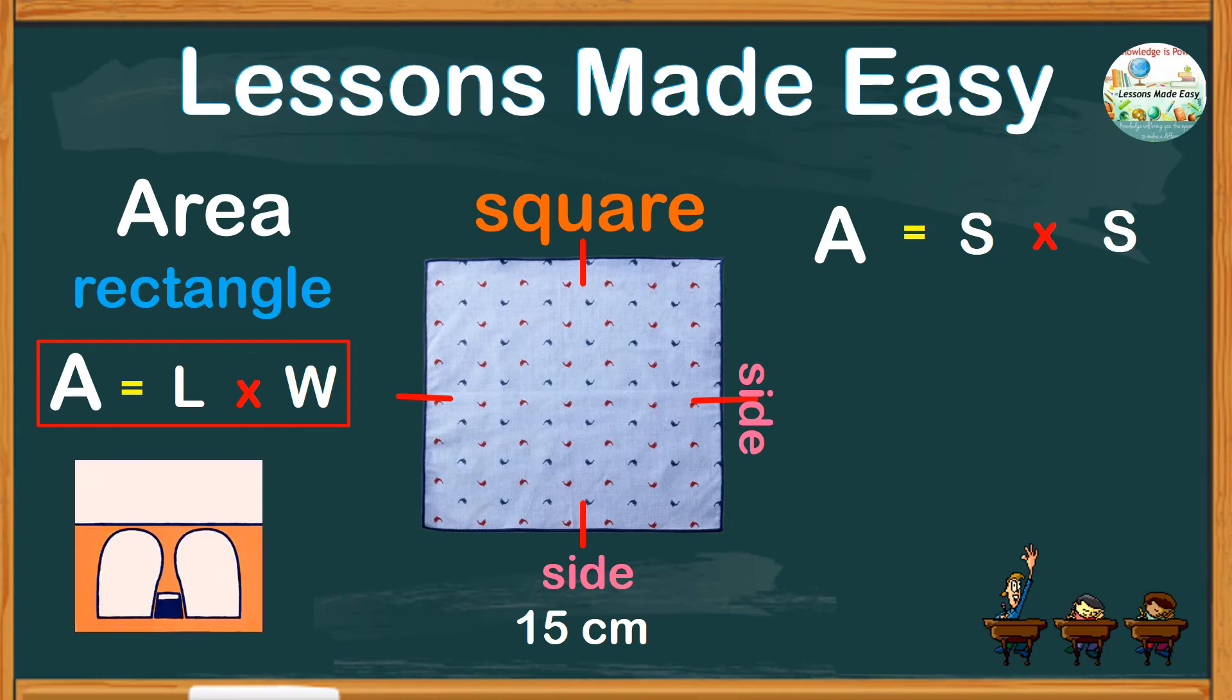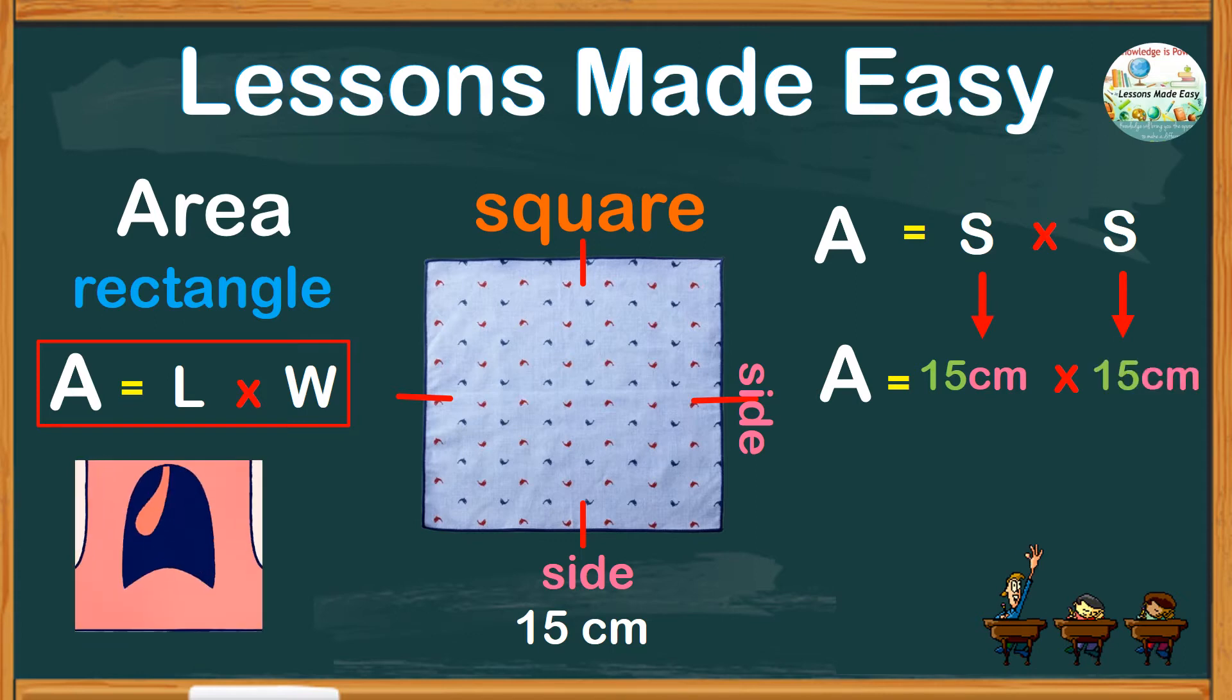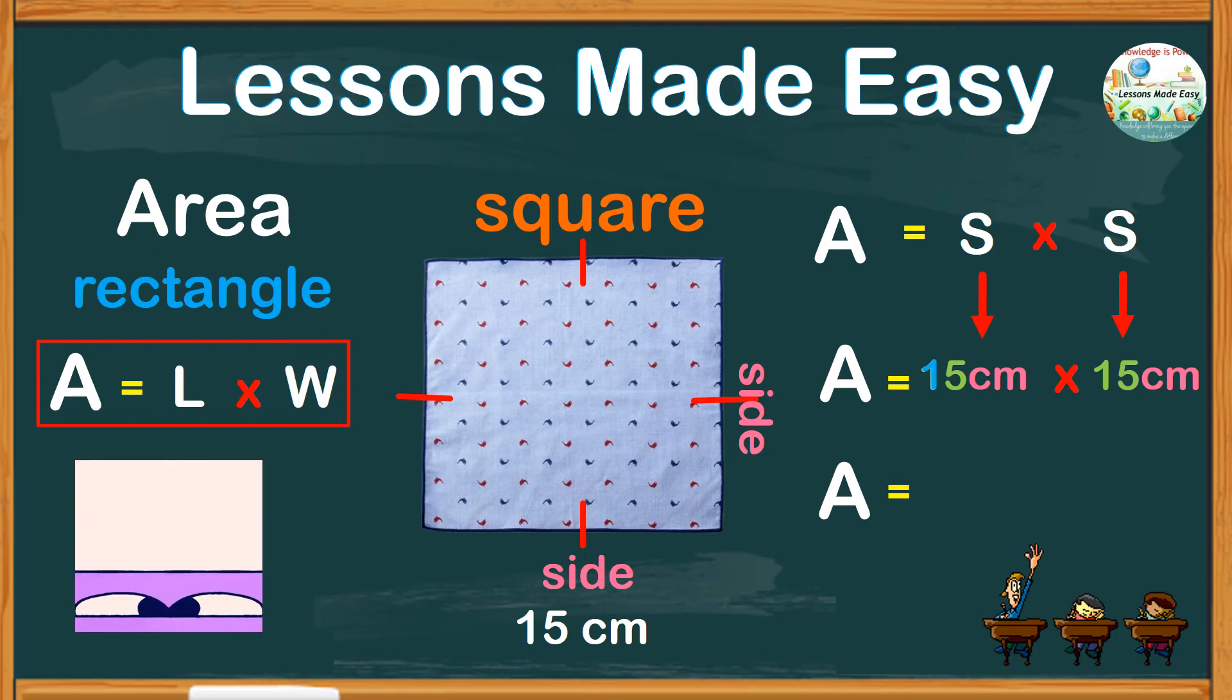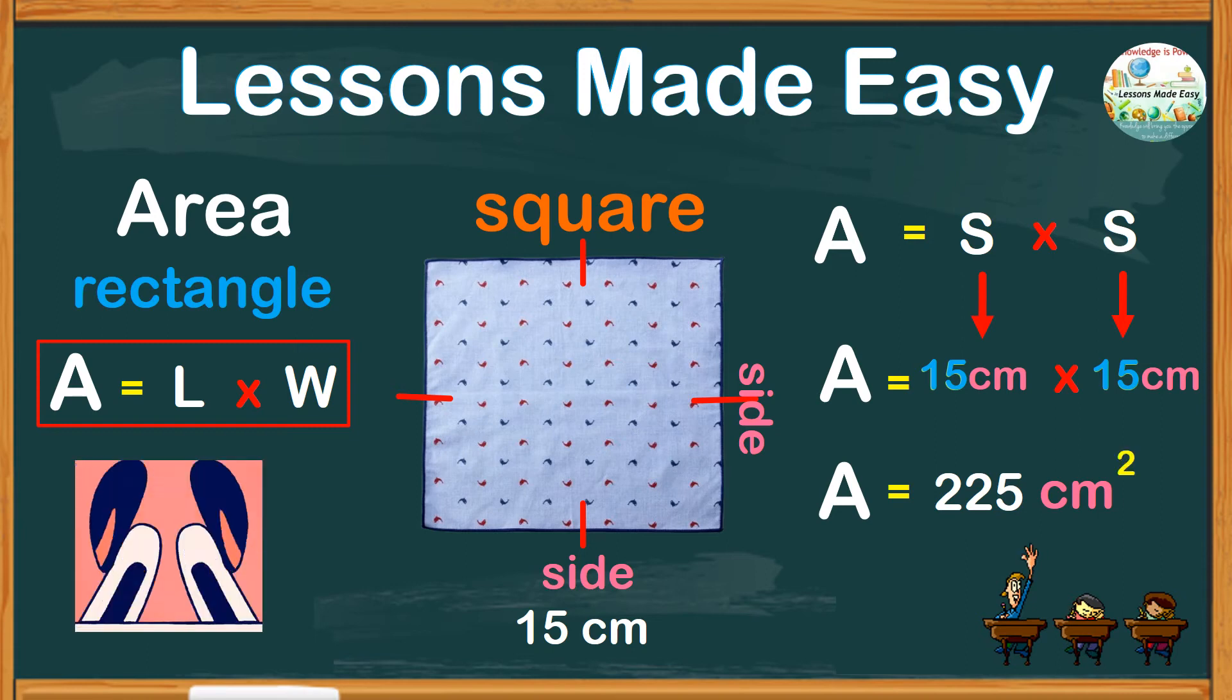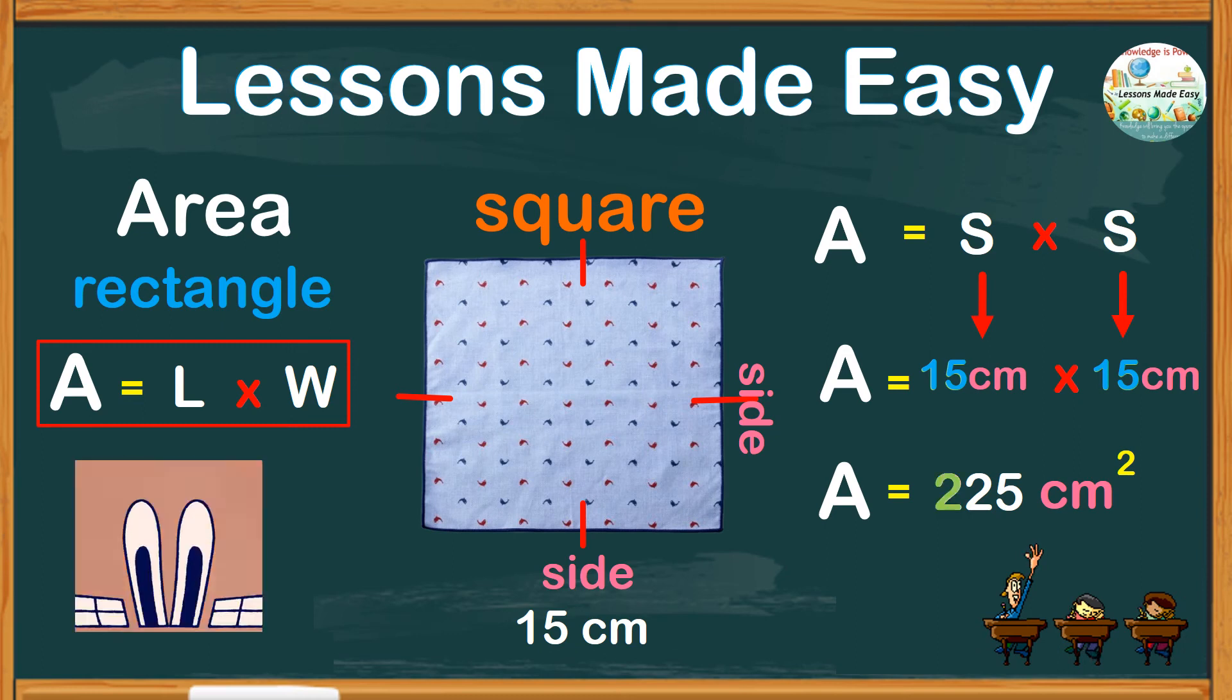Then substitute the values. Area equals a side of 15 centimeters times another side of the same measurement, which is 15 centimeters. So the area would be the product of 15 times 15. This would give us a product of 225. The unit centimeter was used twice, so this will be written with 2 as the exponent. Our final answer, therefore, is 225 square centimeters.